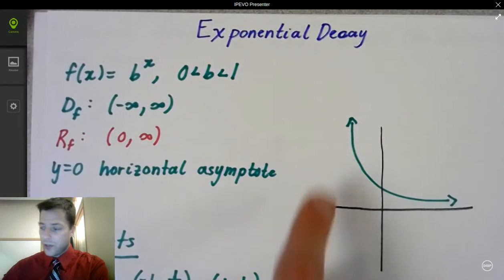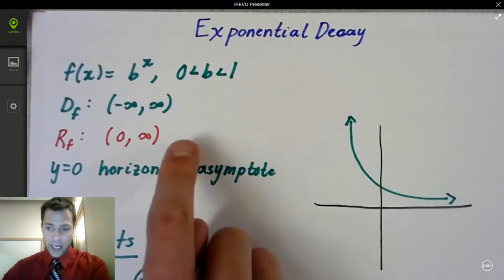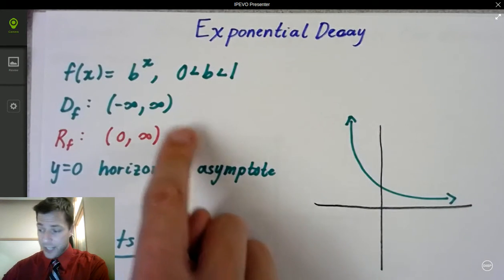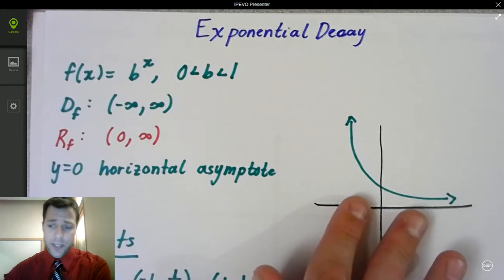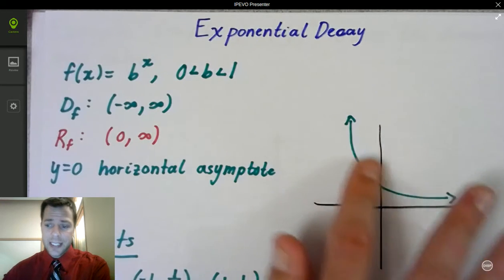So this is the general form of the graph. Domain and range still stay the same, all real numbers for the domain, 0 to infinity for the range because it's above the axes. This is a decreasing function.